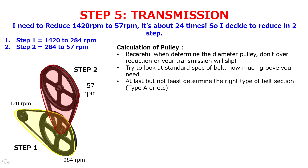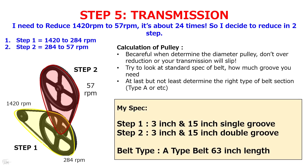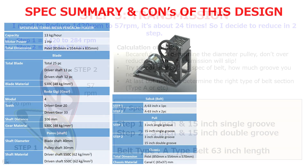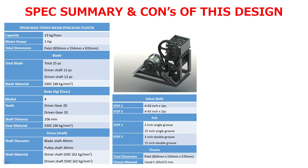Here are my specifications: Step one pulley uses 3-inch and 15-inch single groove. Step two uses 3-inch and 15-inch double groove. The belt type is A-type, 63-inch length. You can use my spec as a design reference.